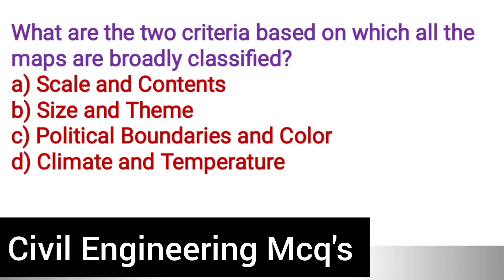Next question: What are the two criteria based on which all maps are broadly classified? Option A: Scale and contents. Option B: Size and theme. Option C: Political boundaries and color. Option D: Climate and temperature. The correct answer is option A, scale and contents.